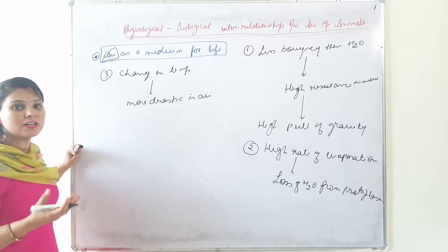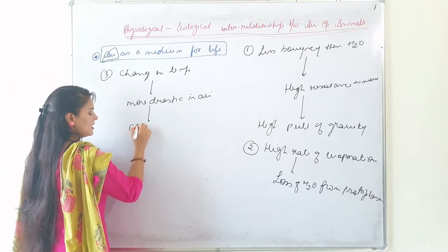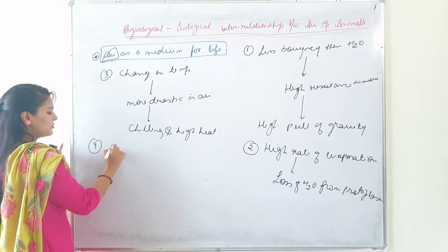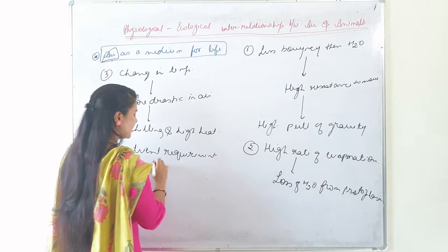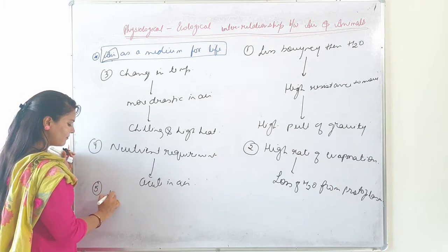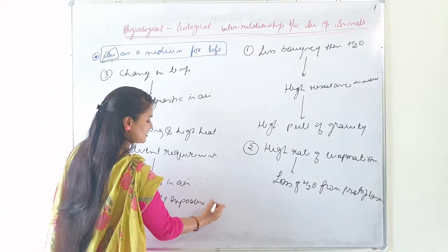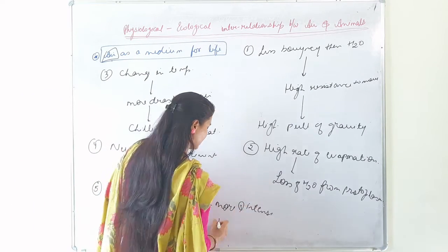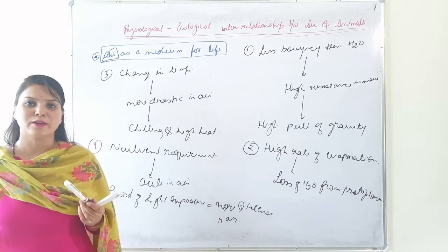Next, the change in temperature is more drastic in air, due to which it leads to the death of living organisms due to chilling and high heat. Also, the nutrient requirement becomes acute in air.